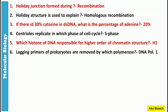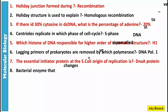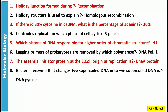Question 5: Which histone of DNA is responsible for higher order of chromatin structure? That is H1. Question 6: Lagging strand primers of prokaryotes are removed by which polymerase? The answer is DNA polymerase I. This question has been asked many times, please note it down. Question 7: The essential initiator protein at the E. coli origin of replication is DnaA protein. Question 8: The bacterial enzyme that changes positive supercoiled DNA into negative supercoiled DNA is DNA gyrase.